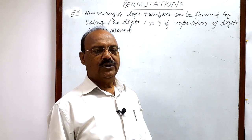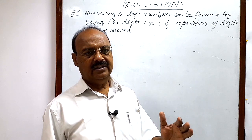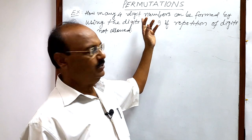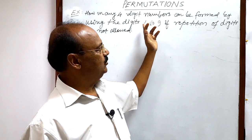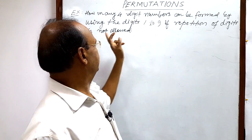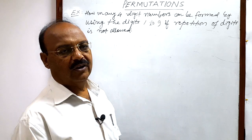So total number of digits is nine and we have to form four-digit numbers. Here we have to note that repetition of digits is not allowed.